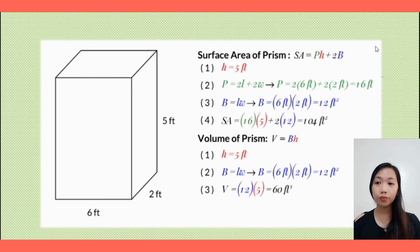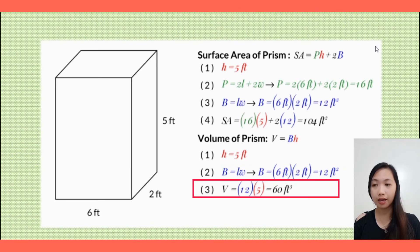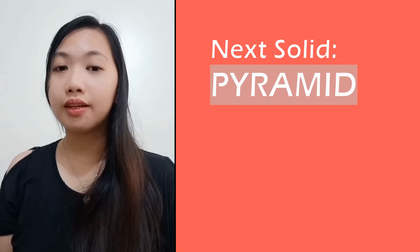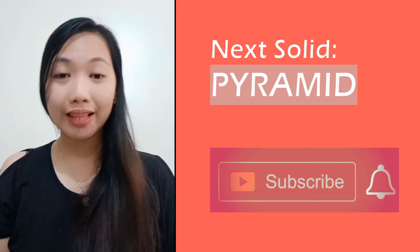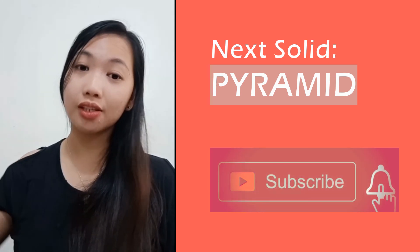For the volume, V = B × h. Our base area is 6 × 2 = 12 square feet, multiplied by the height of 5 feet, which equals 60 cubic feet. That's all for the prism, and now we move on to our next solid.